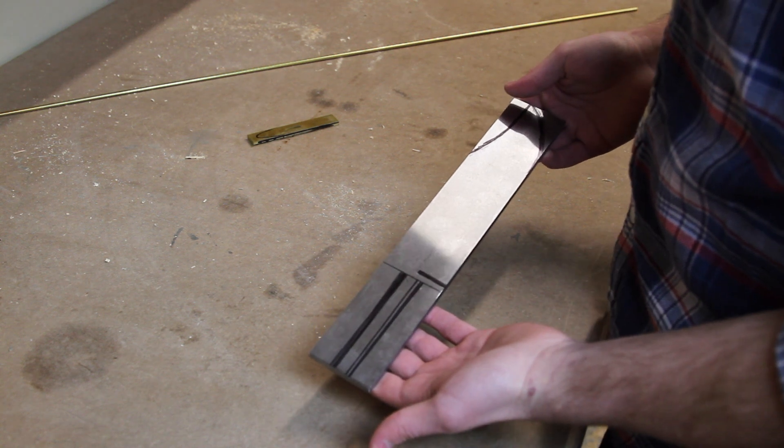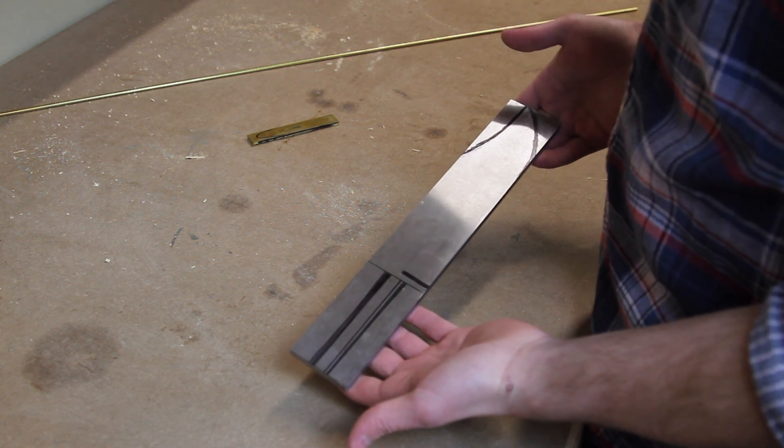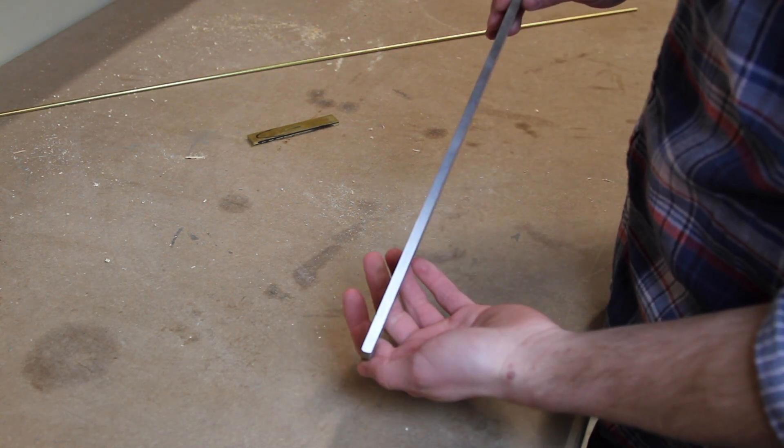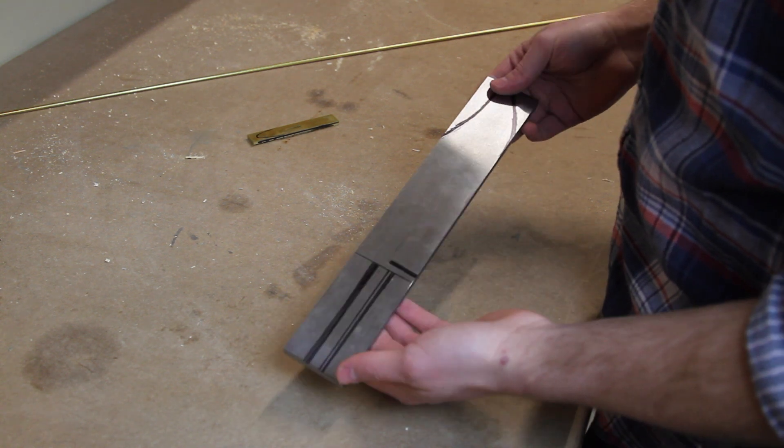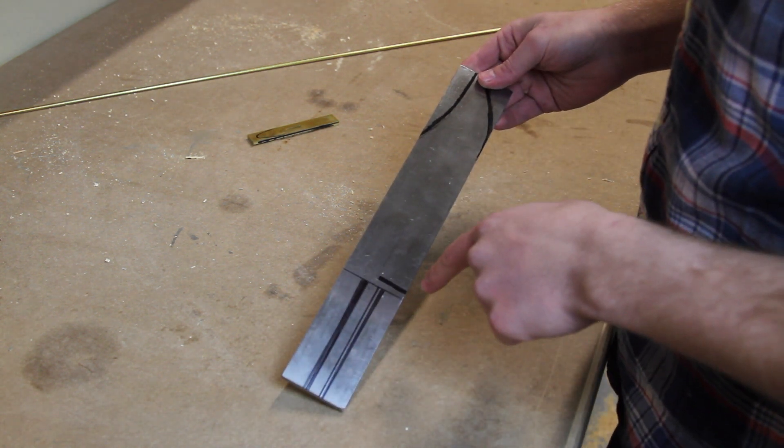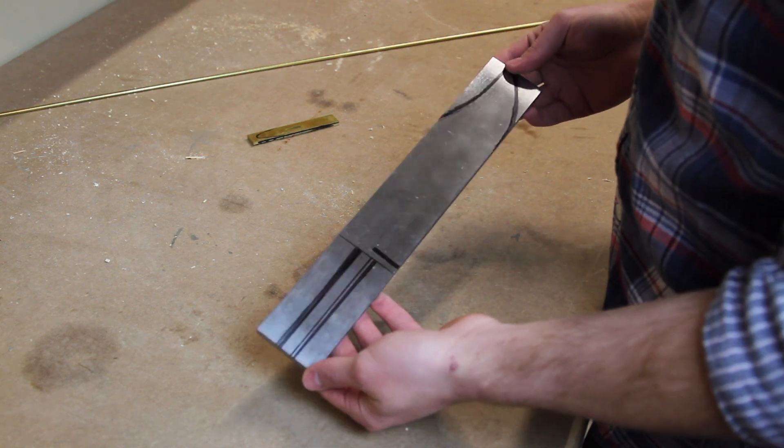Okay, so I'm starting out with a piece of O1 tool steel that's 12 inches long, a quarter inch thick, and two inches wide. I drew the rough shape of the knife that I want to follow, and now we're going to head over to the grinder.